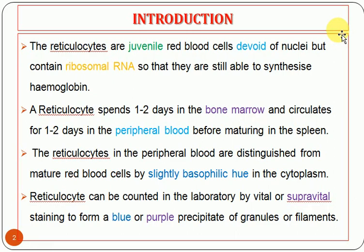Like mature RBC, reticulocytes also do not have a nucleus. But the main difference is that the reticulocyte contains ribosomal RNA in their cytoplasm, whereas normal RBC do not. Ribosomal RNA is important in the reticulocyte because hemoglobin synthesis still occurs at this stage.